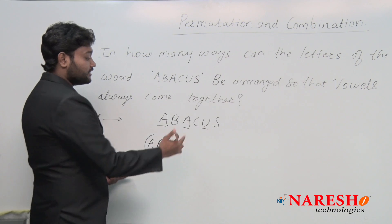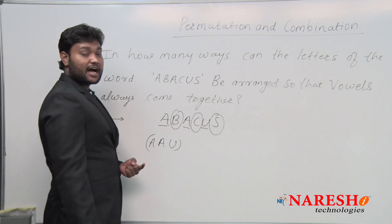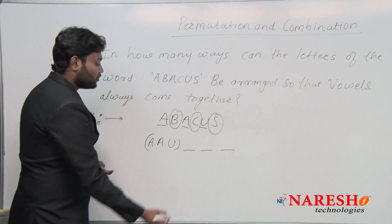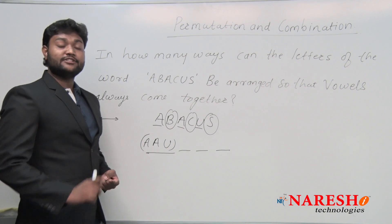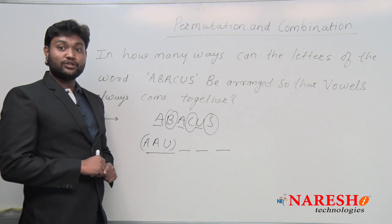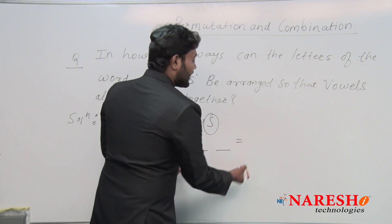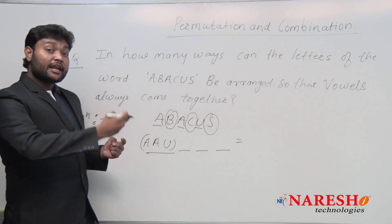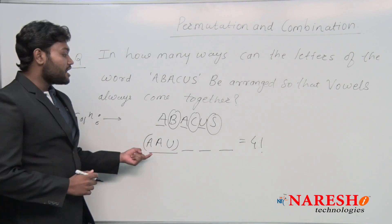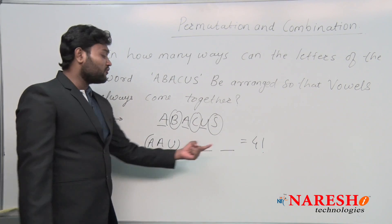Apart from the vowels, there are three letters remaining — that is, three consonants. Since we've considered all vowels as one single unit, there are a total of four units. Arranging these four units can be done in 4! ways.